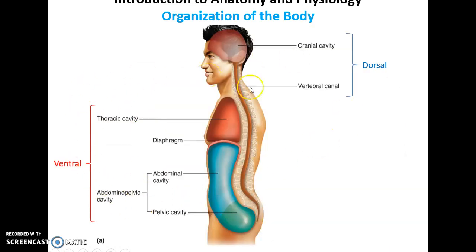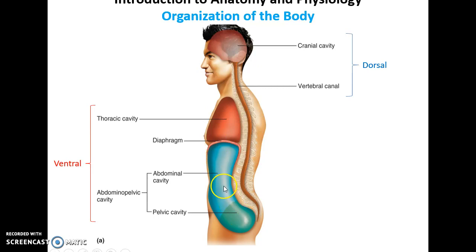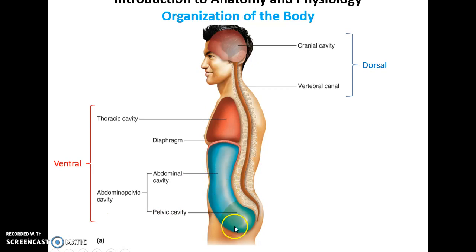Then we have the ventral chambers, which include the superior thoracic cavity (the chest area) and the abdominal pelvic cavity below that. The thoracic cavity is separated from the abdominal pelvic cavity by the diaphragm — an actual physical separation. The abdominal pelvic cavity can be broken down into the abdominal cavity and the pelvic cavity; however, these two cavities have no physical separation between them.